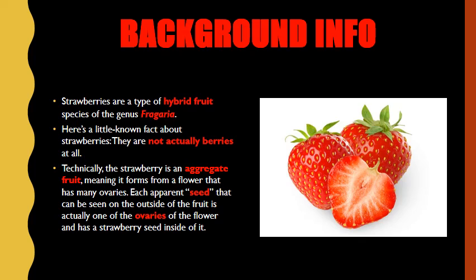First up, a little bit of background information. Today's video is going to last a little longer than my average videos because strawberries are extremely popular and most people actually love them. Strawberries are a type of hybrid fruit species of the genus Fragaria. Here's a little-known fact: they are not actually berries at all. Technically, the strawberry is an aggregate fruit, meaning it forms from a flower that has many ovaries. Each apparent seed seen on the outside of the fruit is actually one of the ovaries of the flower, with a strawberry seed inside of it.